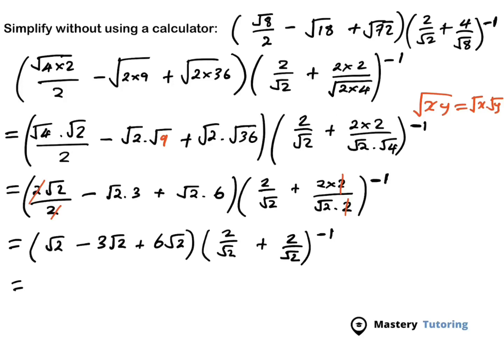So we have: 2 minus 3 square root of 2 plus 6 square root of 2. You can treat this square root of 2 as x — so it's x minus 3x plus 6x — which means it's basically 1 minus 3 plus 6, which equals 4. So this is going to be 4 square root of 2.